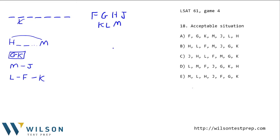Let's answer question 18 first, which asks which of the following is an acceptable ordering of the seven objects. Taking one rule at a time: L cannot be in the second spot, so B and E are out. H and M must have at least two things in between — those all check out. G and K have to be together. M must be before J, so C fails. L before F before K means A doesn't work. D has L, F, K in order, so D satisfies all conditions.